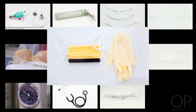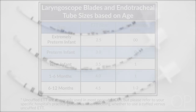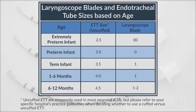Personal protective equipment, including gloves or other items as per your unit's policy, should also be obtained prior to the procedure. The suggested endotracheal tube size and laryngoscope blade size can be determined by the patient's corrected gestational age or weight, as shown in this table.